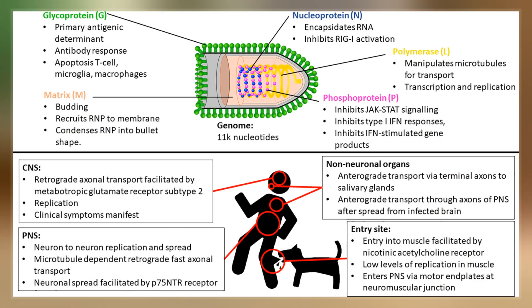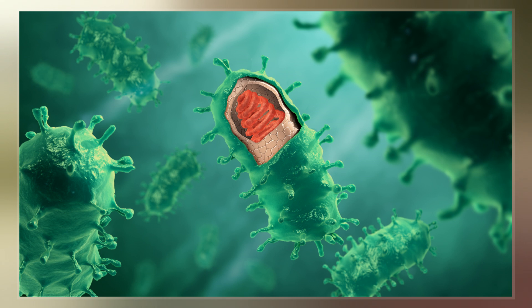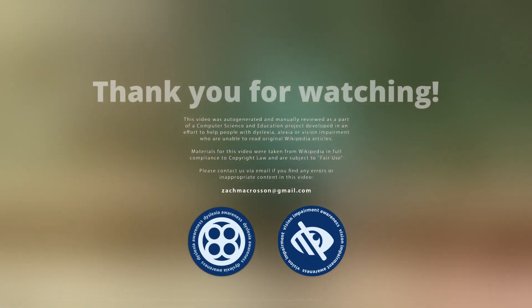Lyssavirus genomes consist of a negative-sense, single-stranded RNA molecule that encodes five viral proteins: large protein L, matrix protein M, phosphoprotein P, nucleoprotein N, and glycoprotein G.